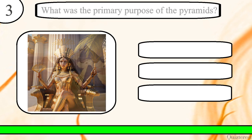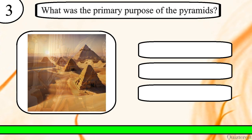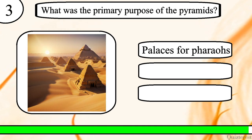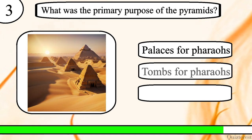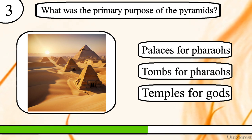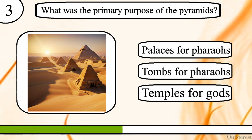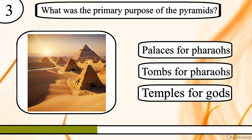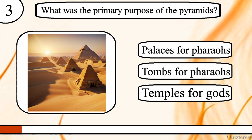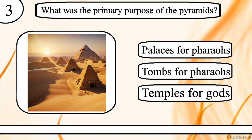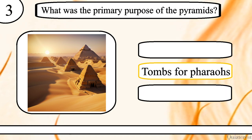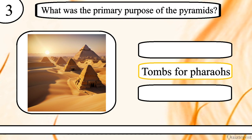Question 3. What was the primary purpose of the pyramids? Palaces for pharaohs, tombs for pharaohs or temples for gods? The correct answer is tombs for pharaohs.